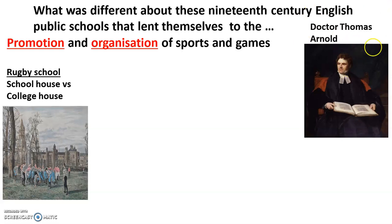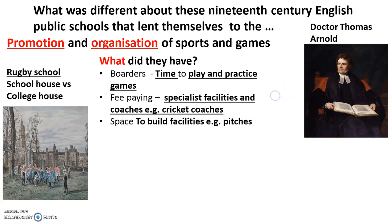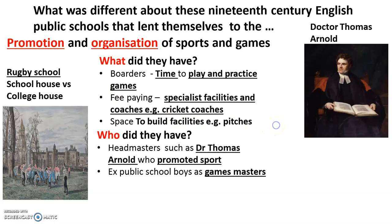So what did public schools have? First, they had boarders — pupils there for full terms, morning, daytime, and evenings — which meant they had time to play and practice games. Parents were paying fees, so there were specialist facilities and coaches; for example, cricket coaches were employed. Finally, these public schools had lots of space to build facilities such as cricket pitches. So they had money, space, coaches, and time, compared to other institutions of that era.